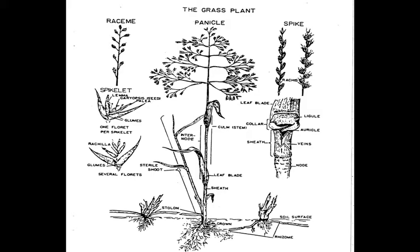Within each one of those inflorescences, the only thing you need to be responsible for is knowing that the next smallest subunit of an inflorescence would be the spikelet. And then that spikelet is usually composed of a number of florets. So the spikelet is the next largest size item, and then smaller than that are the florets. Other than that, you don't have to learn all those other terms on this sheet.